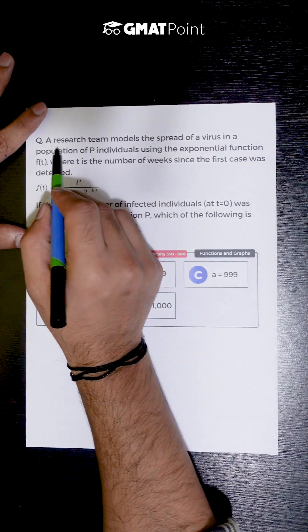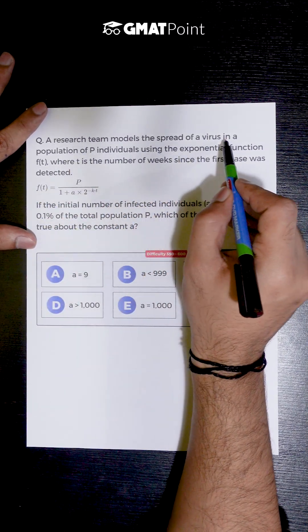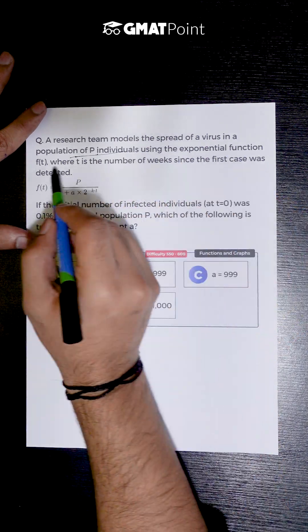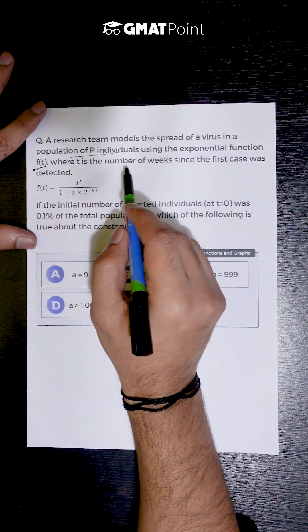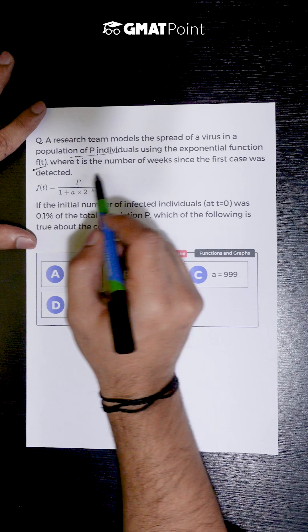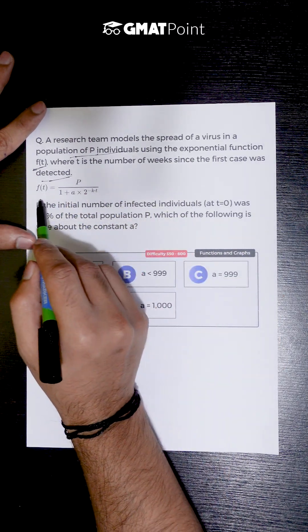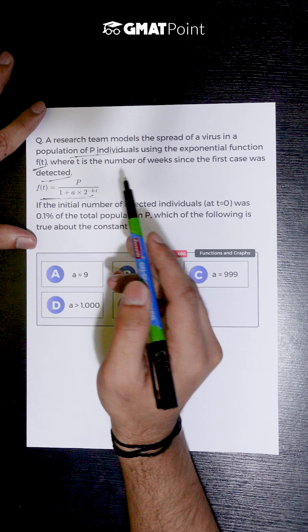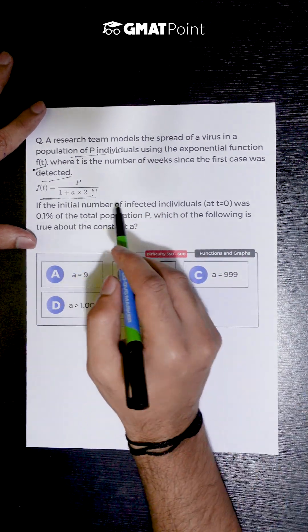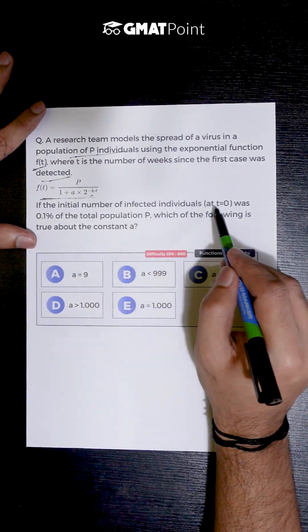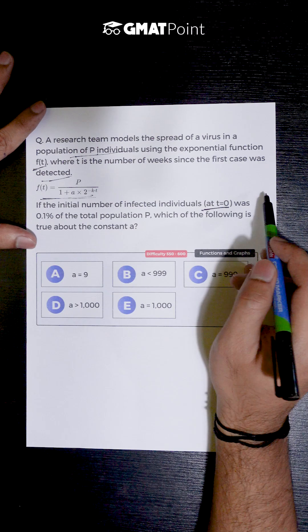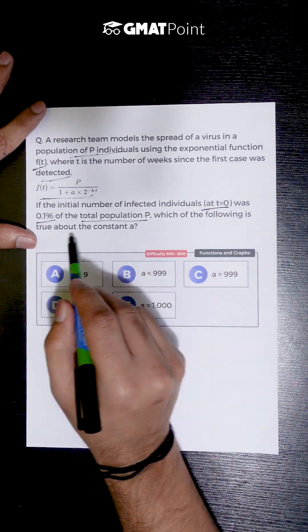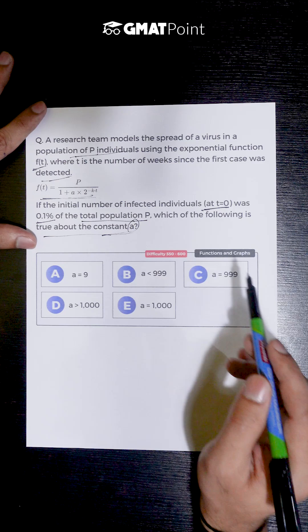Let us see how to solve this question. A research team models the spread of a virus in a population of P individuals using the exponential function f(t), where t is the number of weeks since the first case was detected, and we are given the function f(t) in terms of P, a, k, and t. If the initial number of infected individuals at t=0 was 0.1% of the total population, which of the following is true about the constant a?